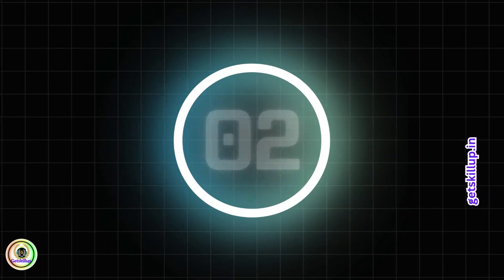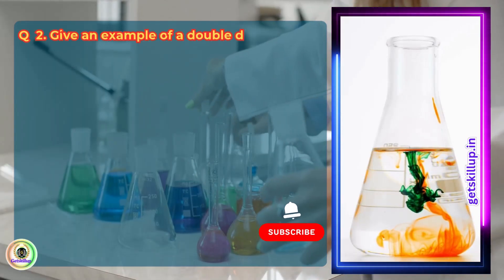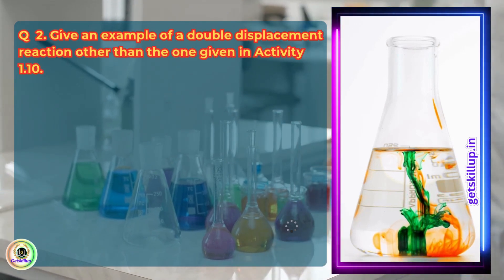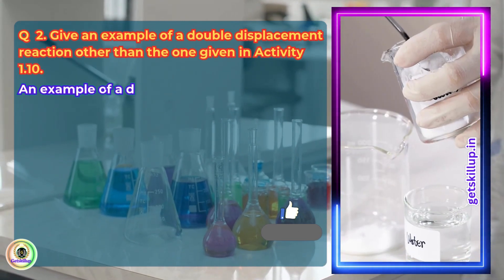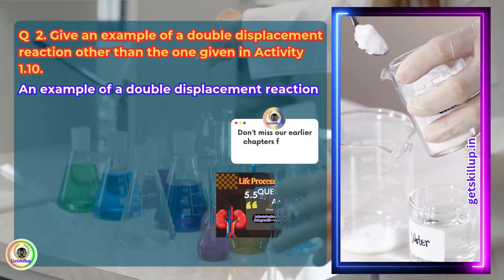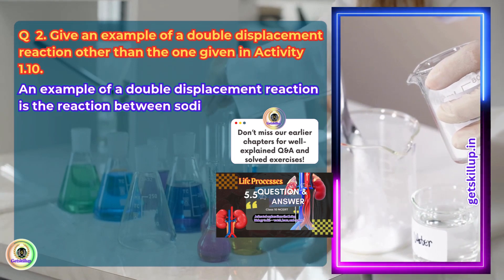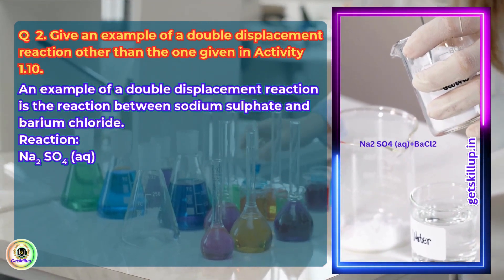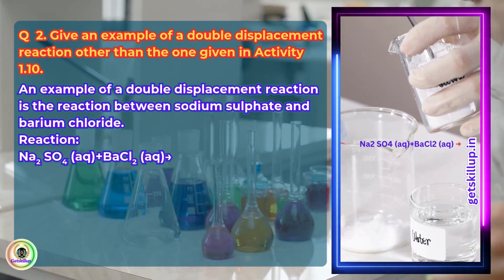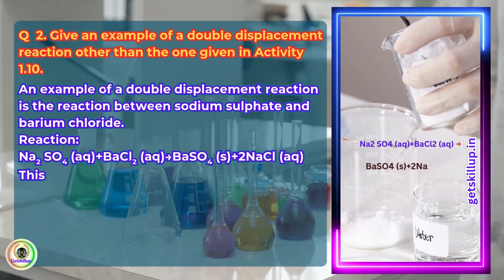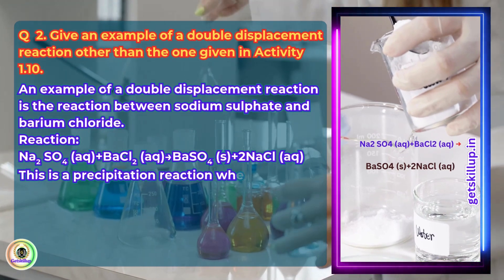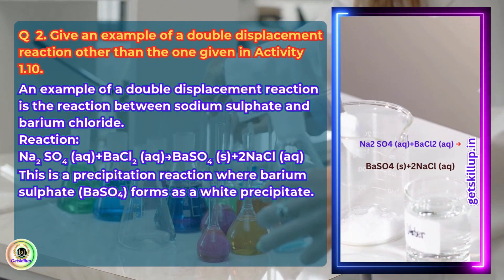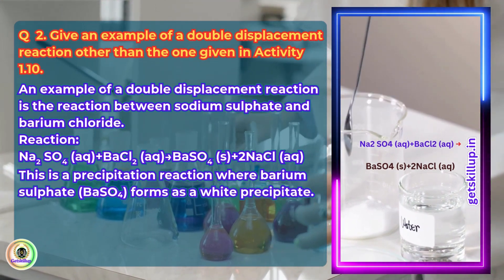Question 2. Give an example of a double displacement reaction other than the one given in Activity 1.1. An example is the reaction between sodium sulfate and barium chloride. Reaction: Na2SO4 (aqueous) + BaCl2 (aqueous) → BaSO4 (solid) + 2NaCl (aqueous). This is a precipitation reaction where barium sulfate (BaSO4) forms as a white precipitate.